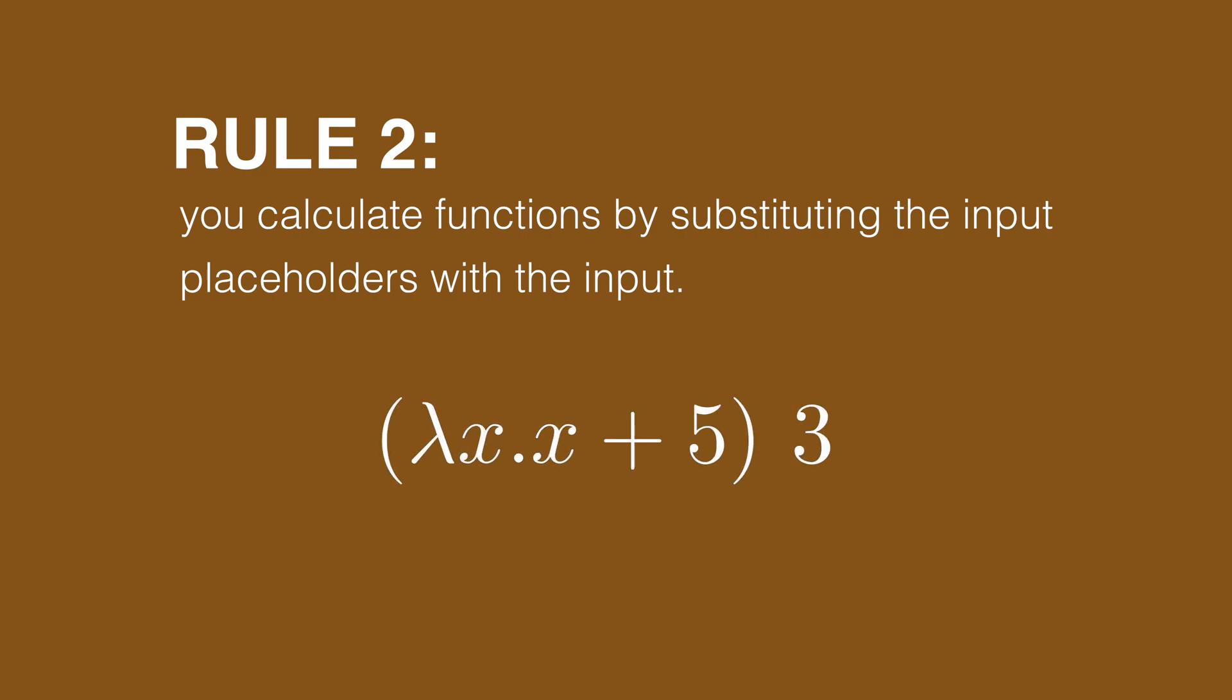The second rule defines the idea of actually using the functions and calling them and passing inputs into them. For every function application, that is to say a function and its input, you can simplify it by removing the function, leaving only the right expression. Then you substitute every word the bound input variable appears with the actual expression. Now with this rule, we can say that function application is equal to its output, because it is just the rule for simplification.